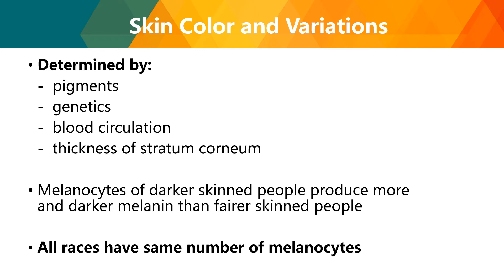Skin color and variations are determined by pigments, genetics, blood circulation, and the thickness of the stratum corneum. The melanocytes of darker-skinned people produce more and darker melanin than fairer-skinned people. However, all races have the same number of melanocytes. The only difference is the amount and quality of melanin produced — the darker the melanin, the darker the complexion.